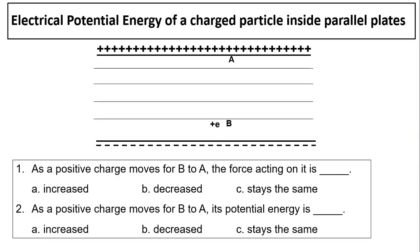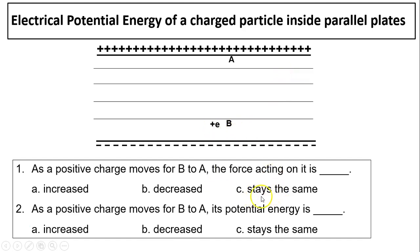Electric potential energy of a charged particle inside a parallel plate. Here is a parallel plate — the field goes from the positive toward the negative plate. If you have a positive charge at B and want to move it to A, you have to do work, because naturally it wants to move toward the negative plate. So if you do work, the potential energy will increase. As a positive charge moves from B to A, the force acting on it stays the same, because the electric field is constant in a parallel plate, and a constant field means constant force. What changes is the potential energy — as the positive charge moves from B to A, the potential energy increases, because you have to do work to move the positive charge toward the positive plate.